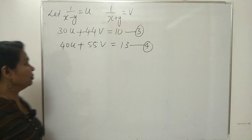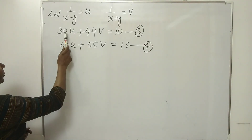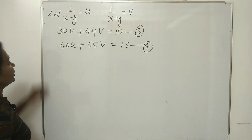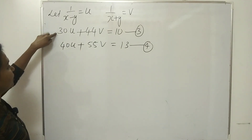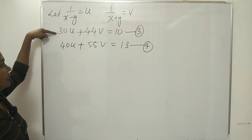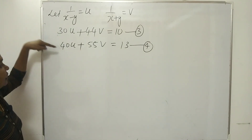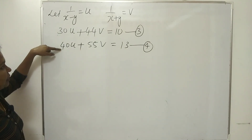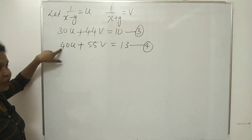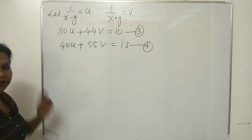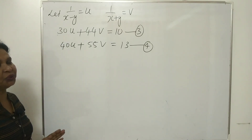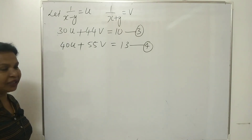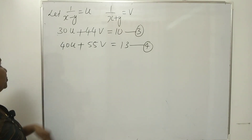Let us use the elimination method to solve equations 3 and 4. Multiply equation 3 by 4 and equation 4 by 3, both giving a coefficient of 120 for u, so we can eliminate u.